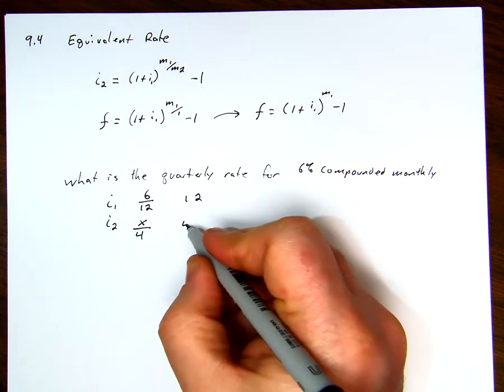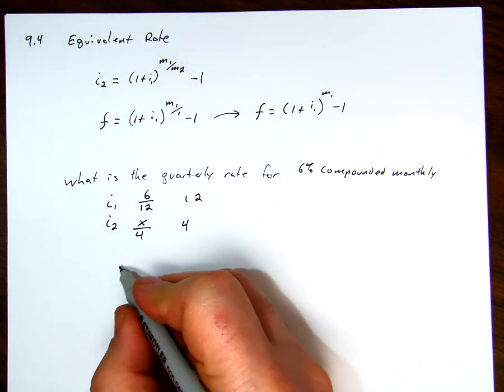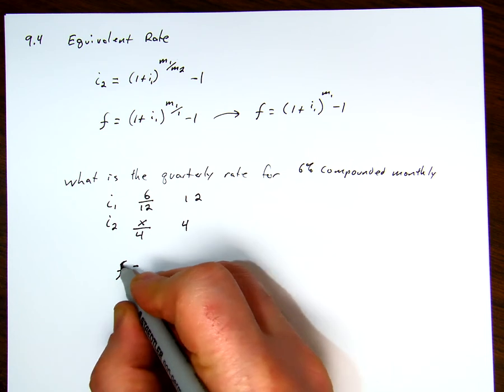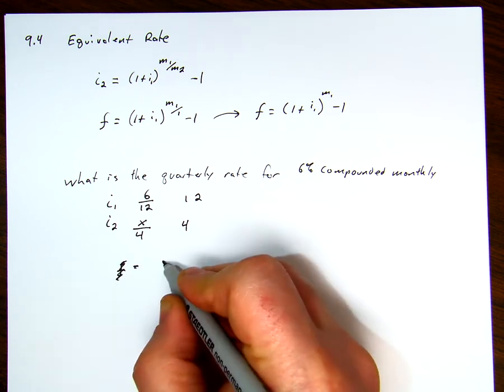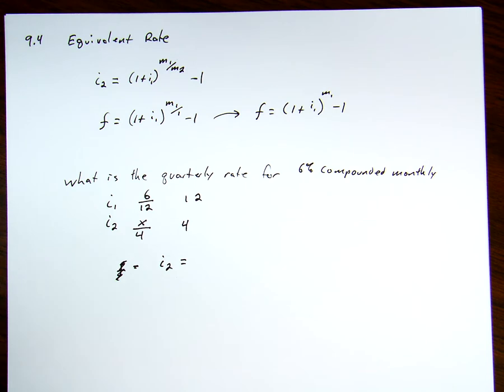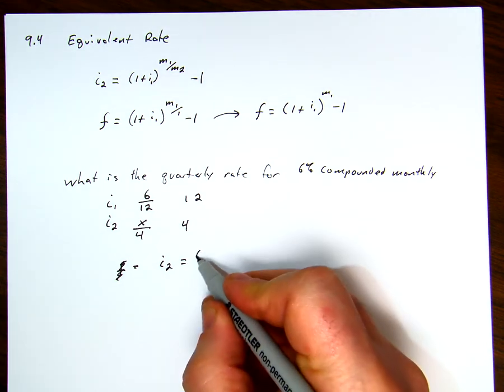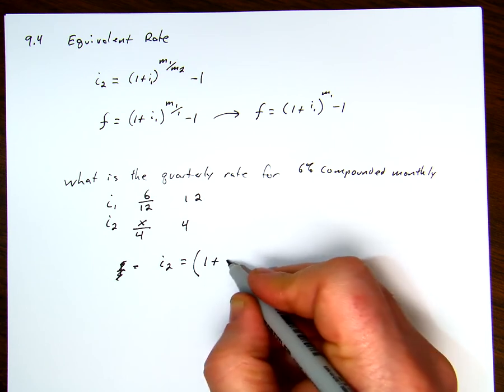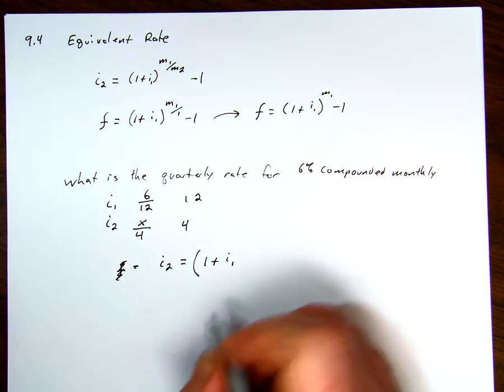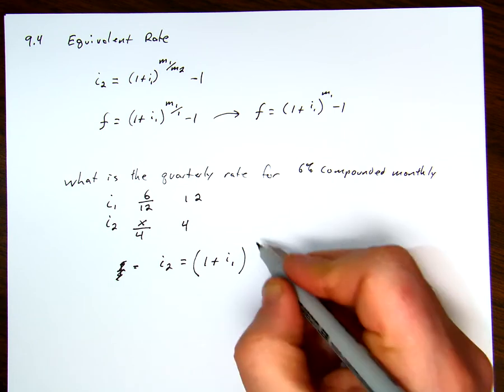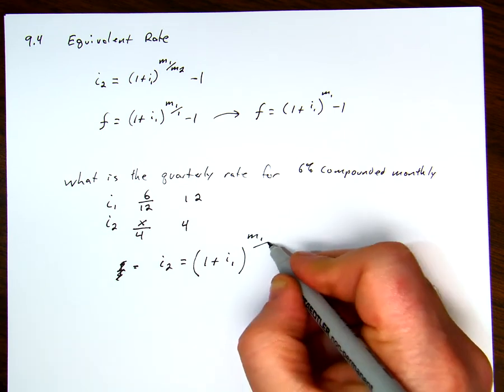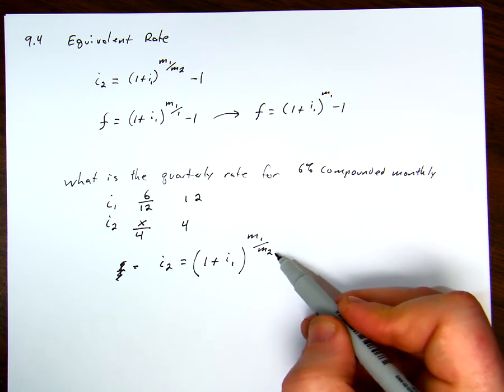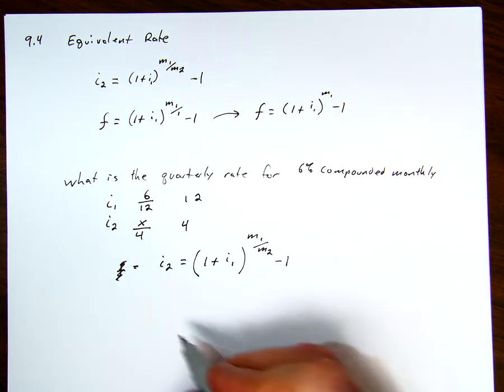i2, this is going to be some percent that we don't know over 4, so our m is 4. So using the formula, we would say the frequency, or sorry, it wouldn't be that. We would say i2, the new equivalent rate, is equal to 1 plus i1, the existing rate, to the m1 over m2. So i2, the original compounding frequency, compared to the new compounding frequency, minus 1.